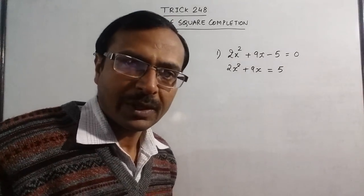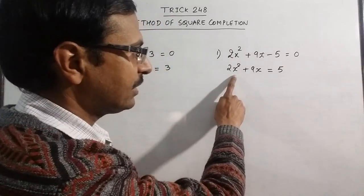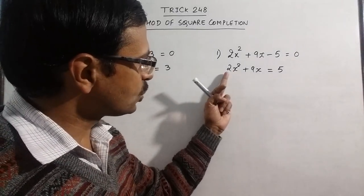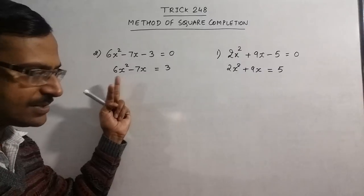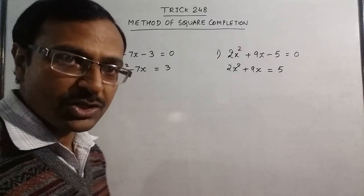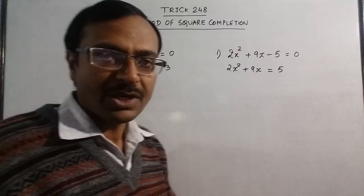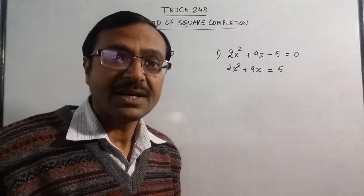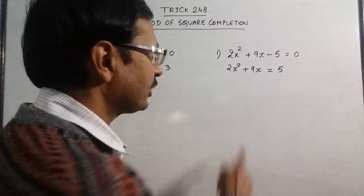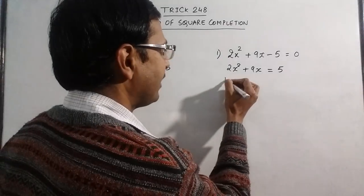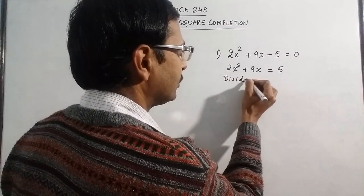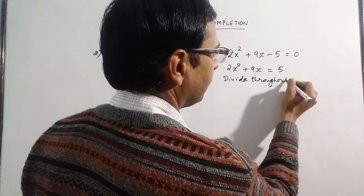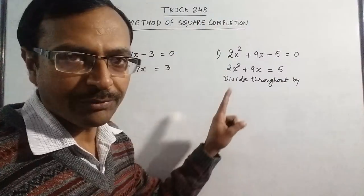After having done so, just have a look at the coefficient of x². The coefficient of x² is 2 in the first equation and 6 in the second. What we need to do is make the coefficient of x² equal to 1. For that, we divide throughout by the coefficient of x².